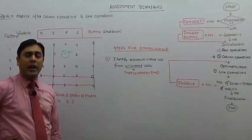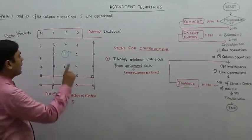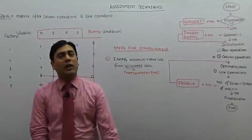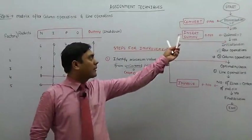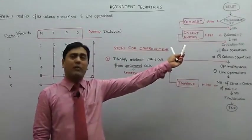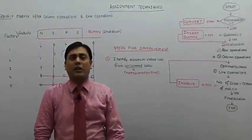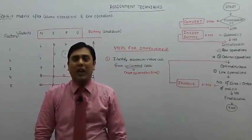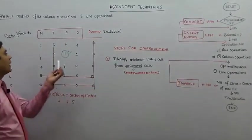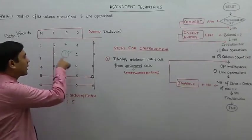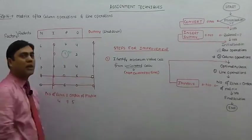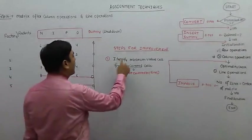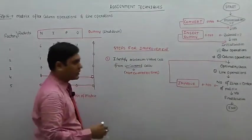Identify minimum value cell from uncovered cell — uncovered me se hi isliye karna hai kyunki further assignment jo humara ek assignment short raha gaya hai, use hum vahin se identify kar sakte hain. Aur minimum isliye kyunki humara objective cost minimization hai. Agar revenue maximization bhi objective ho, to use minimization me convert karne ke baad hi solve karte hain. So revised objective ya original objective jo bhi ho, woh minimization hai — so you should identify the minimum value cell.